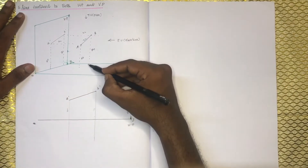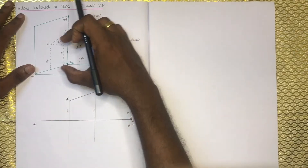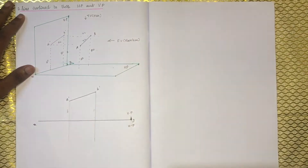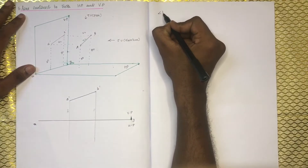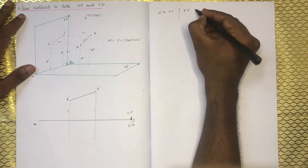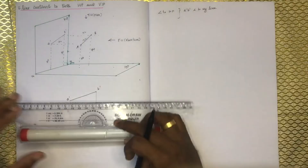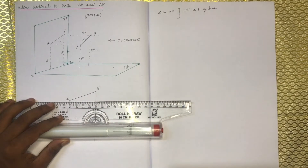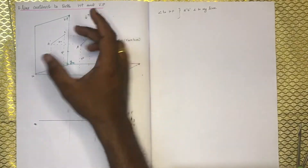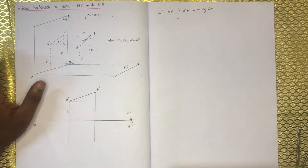The heights are 50 and 70. This is a parallel item. Therefore, if we look at the true length, the value is 100. Now this is the inclination.